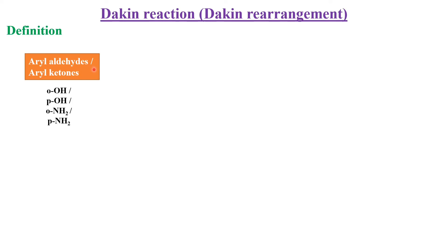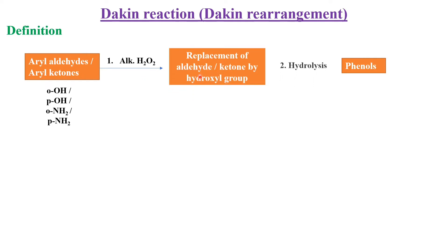Aryl aldehydes or ketones having ortho-hydroxy or para-hydroxy or ortho-amino or para-amino groups finally give phenol by treating with alkaline hydrogen peroxide. During that conversion, there may be replacement of the aldehyde or ketone group by a hydroxy group. There may be two steps: one is treating with alkaline hydrogen peroxide, and another is hydrolysis to get the final product phenol.